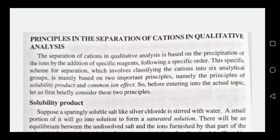Today, we are going to discuss about the principles in the separation of cations in qualitative analysis. In qualitative analysis, we use two principles in the separation of cations. The basis is precipitation — ions are precipitated using a specific reagent added in a specific order. That means precipitation and cations are separated. We use two principles: solubility product and common ion effect. We use a specific scheme of separation, classifying cations into six analytical groups.